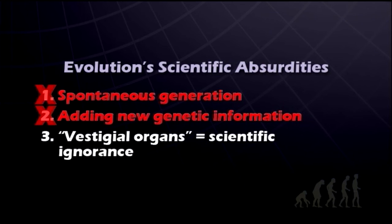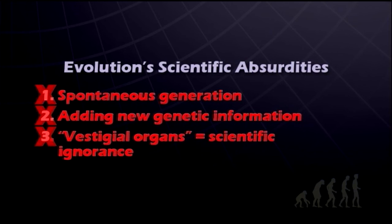We looked at vestigial organs, the idea promoted over a century ago that somehow within humans we had organs and structures that were evolutionary leftovers, that they no longer had any use or function, and that because of that, it was evidence for evolution. We've shown that it really was not evidence for evolution; it was simply evidence for scientific ignorance. As time passed and scientific studies were performed, we learned about vital functions for all 180 of the organs and structures originally proposed to be vestigial.